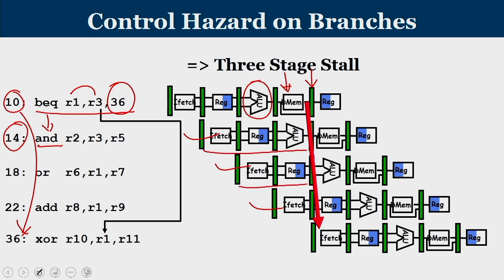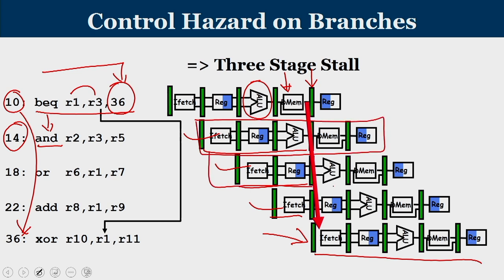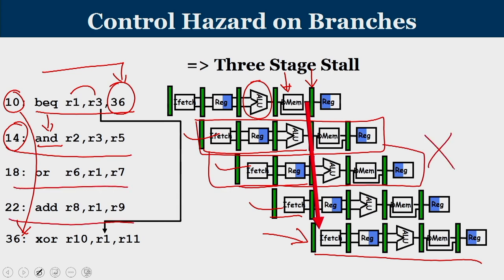One instruction has been fetched, decoded, and executed; one has been fetched and decoded; and the third has been fetched. Let us assume the branch condition is taken, meaning R1 value equals R2, so execution goes to line 36. Already 3 instructions have entered the pipeline — the follow-through instructions from lines 14, 18, and 22 — which are not needed. They are not supposed to be the instructions fetched, because the instruction to be executed after a branch depends on the branch outcome. Since we fetch one instruction each cycle, these follow-through instructions are brought in and later we realize they are not needed, so we must flush them out.